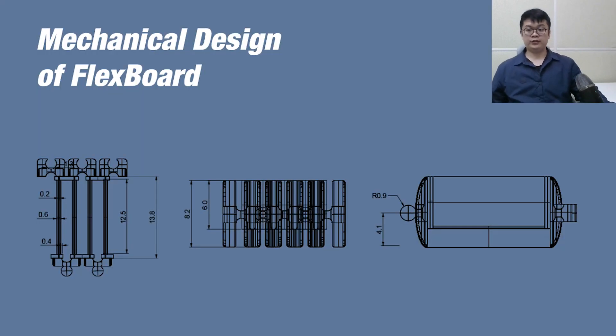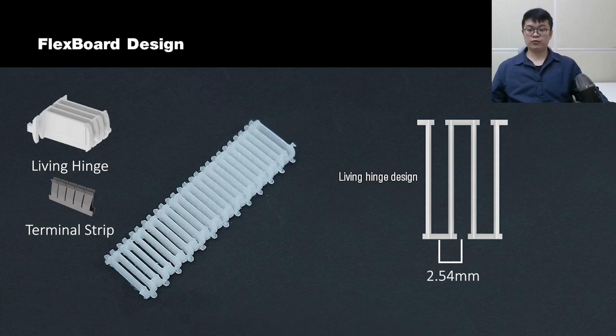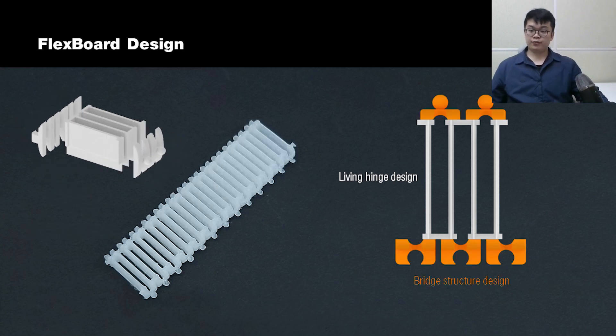Let's dive deeper into the mechanical design of FlexBoards. FlexBoard structure is based on traditional living hinge, which allows it to be bent. Each hinge structure holds one terminal strip that are embedded in existing breadboards, while keeping the standardized spacing. We added bridge structure to the base living hinge design to tightly hold the terminal strip even when bent.